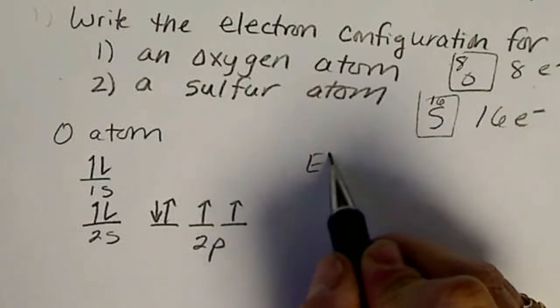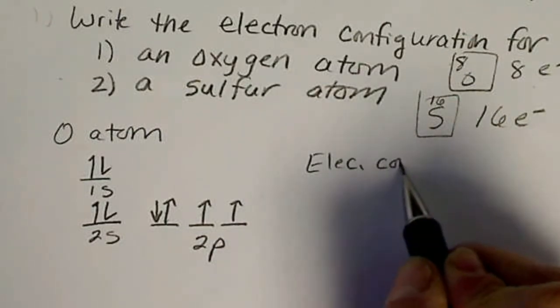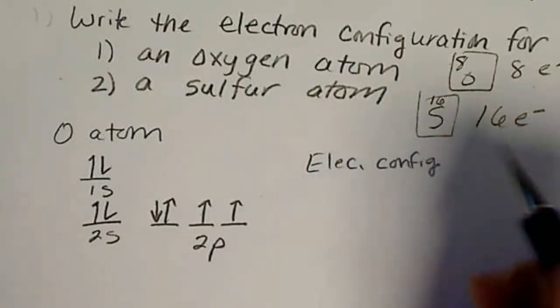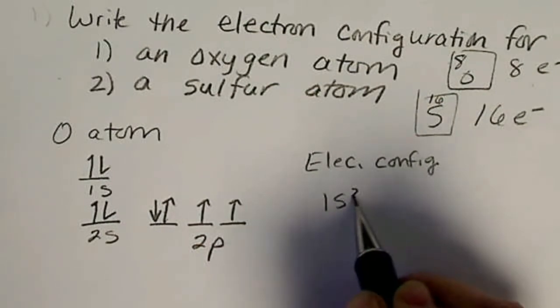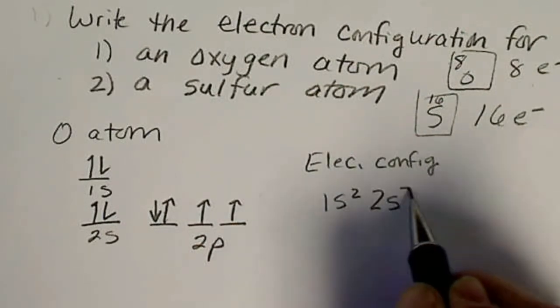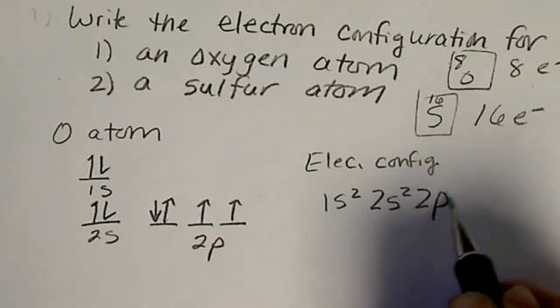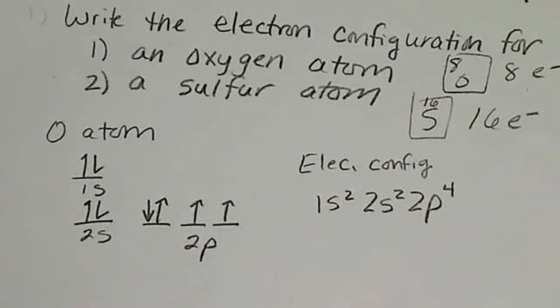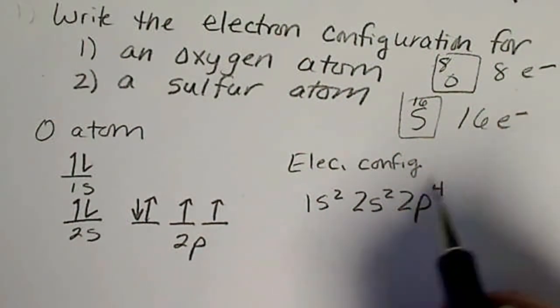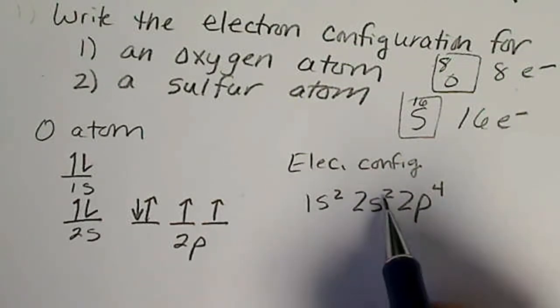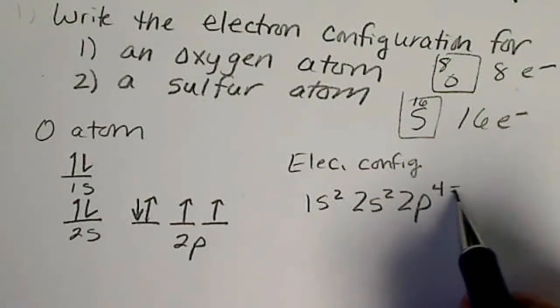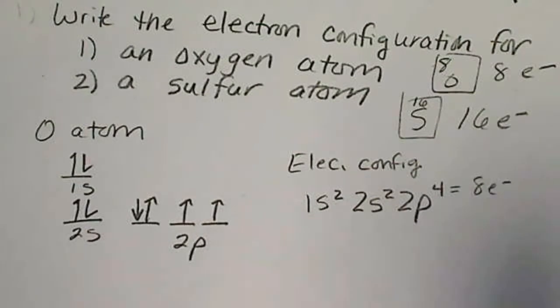The electron configuration is 1s2, 2s2, 2p4. The number across the top is the number of electrons, so 2 plus 2 plus 4 equals 8 total electrons.